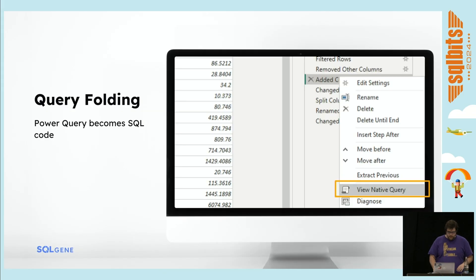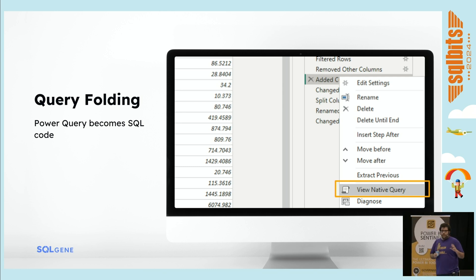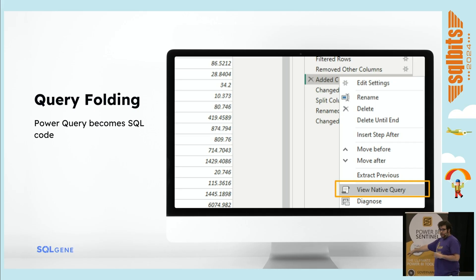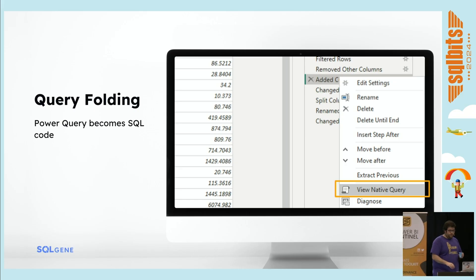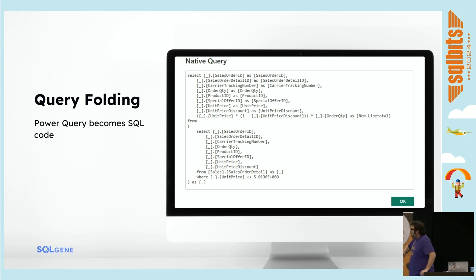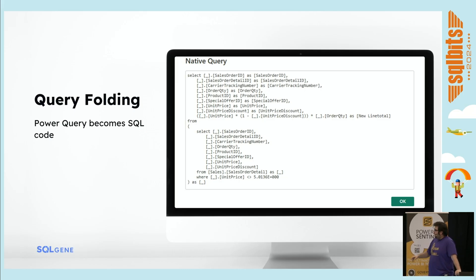The way you can tell is you go to a step, right-click, and say 'View Native Query.' This depends entirely on the data source and whether it's supported — you could also write a custom connector and enable query folding. Sometimes 'View Native Query' will be grayed out, which usually means a step broke query folding, but not always. The only way to be absolutely sure is to run a trace on your source system and see what it's sending. But if you select View Native Query, you can see some of the ugliest SQL code you'll ever see — because it's machine-generated.